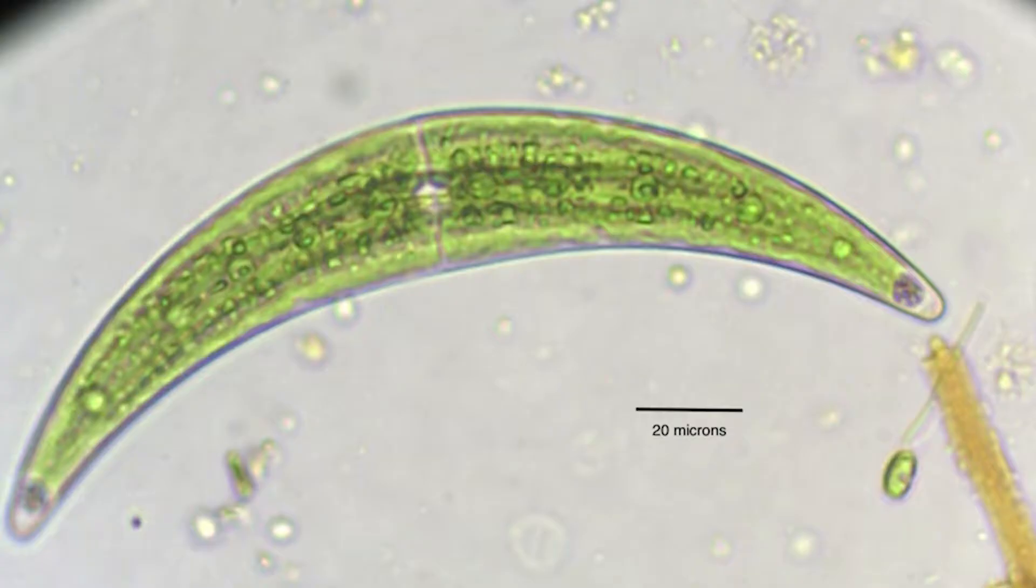In Closterium, the crystals are found in small vacuoles at the edges of the organism. So I recently found a specimen of Closterium in a pond sample, and I had to look.